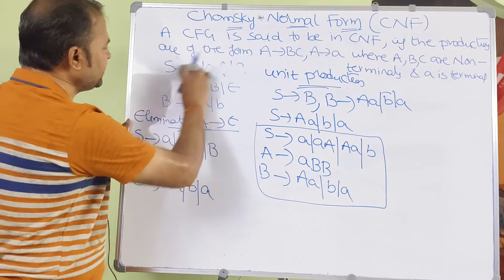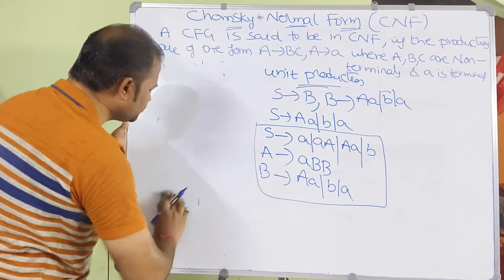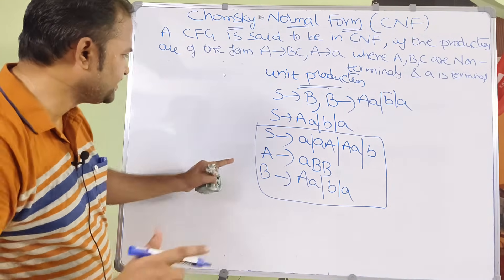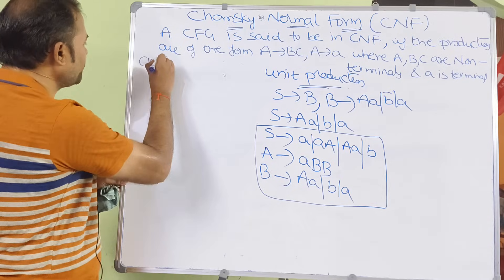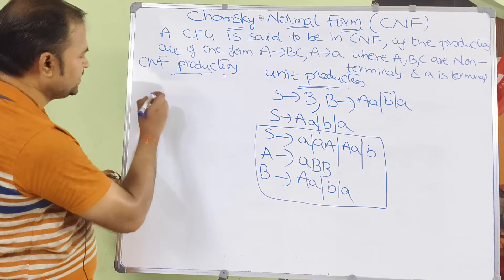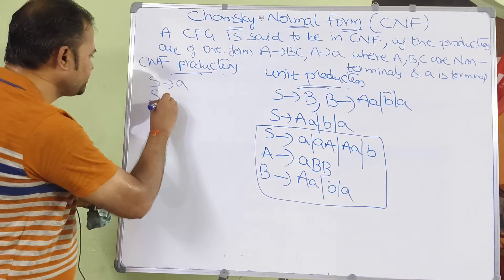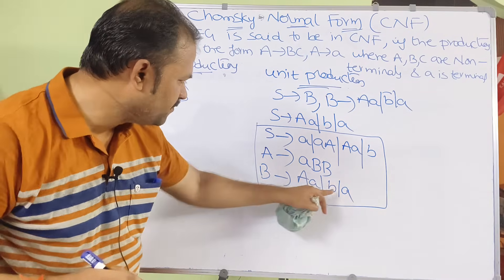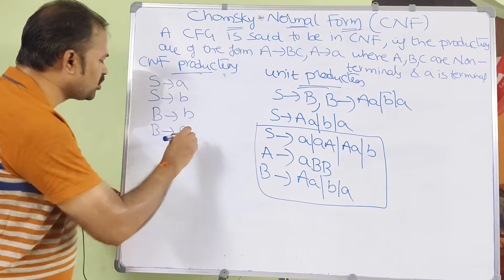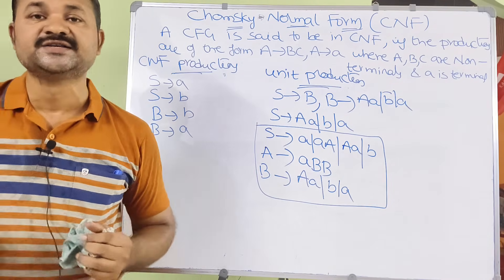Before converting to CNF, if the grammar contains any epsilon productions, useless symbols, or unit productions, we must simplify first. Now identifying CNF productions in the simplified grammar: S produces a (non-terminal producing single terminal — valid CNF), S produces B (valid CNF), B produces b (valid CNF), and B produces A (valid CNF). These four productions are already in Chomsky Normal Form.